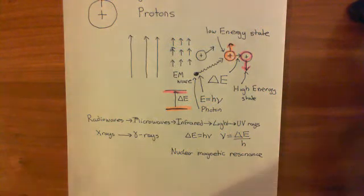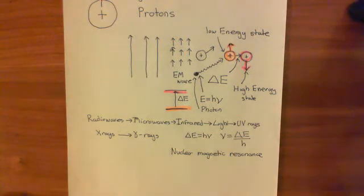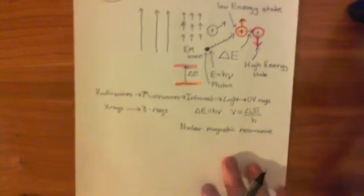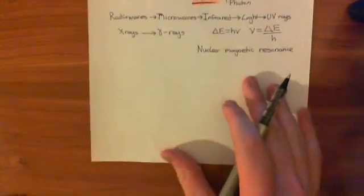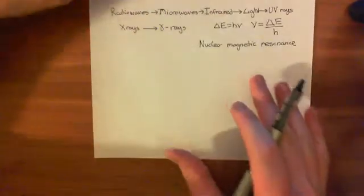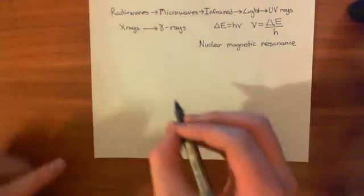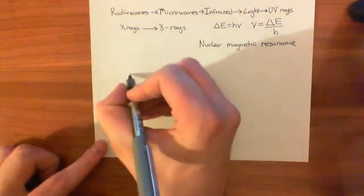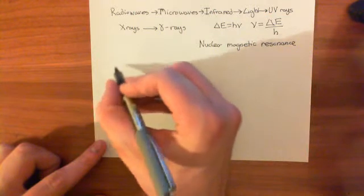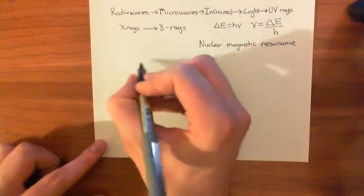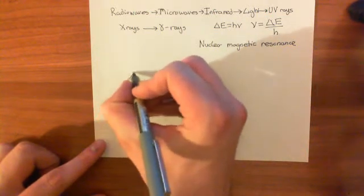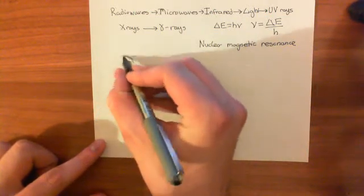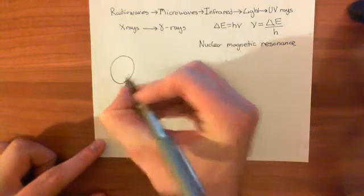We're now in a position to start describing the process of MRI. The MRI imaging machines are quite terrifying. What they are is a huge, circular cylinder — I'll try and draw this — a great circular cylinder like so.